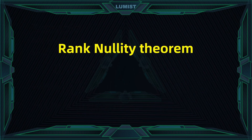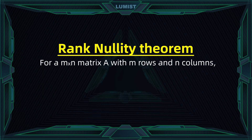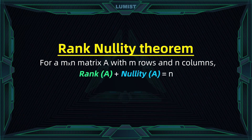A key theorem in linear algebra connecting these concepts is called the Rank-Nullity Theorem, and it states that for an m times n matrix — specifically a matrix with n columns — its rank plus its nullity must equal n, the number of its columns. This theorem is super useful since the number of columns is simply observable, and with that, if you know one of rank or nullity you can very easily find the other.